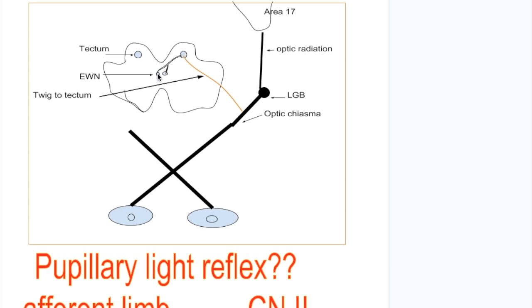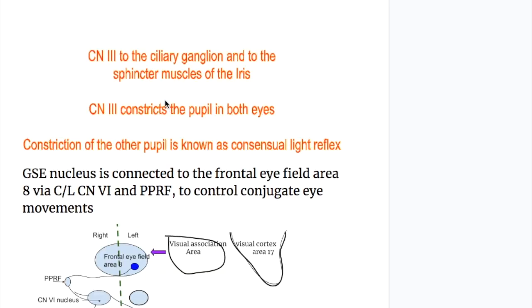So direct and indirect pupillary light reflex — i.e., consensual reflex — are both positive if light is thrown in one pupil. The oculomotor nerve supplies the sphincter muscles of the iris by relaying through the ciliary ganglion.